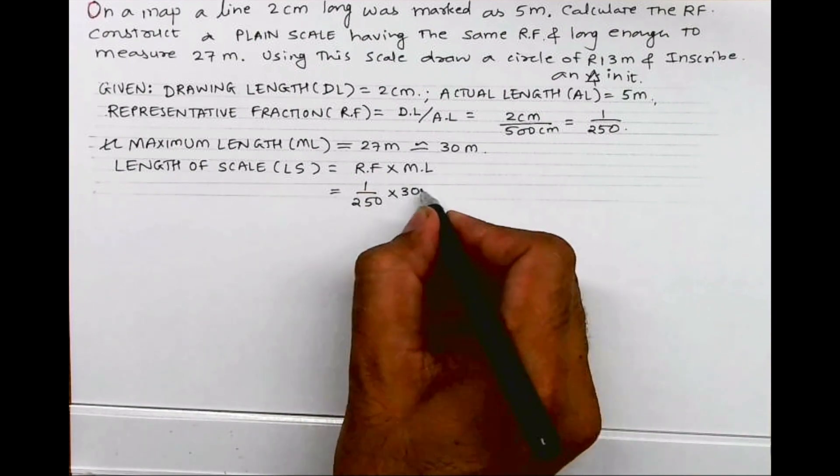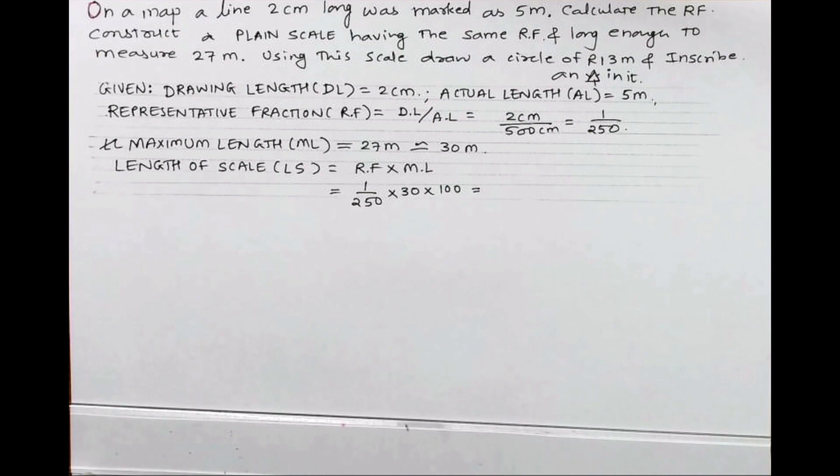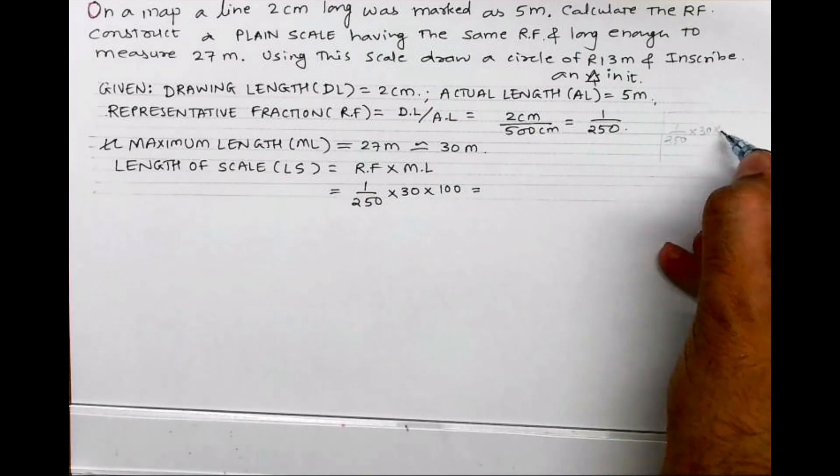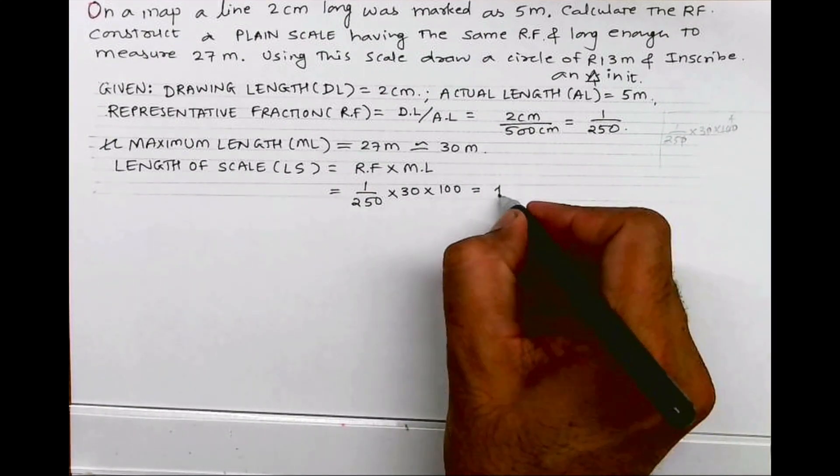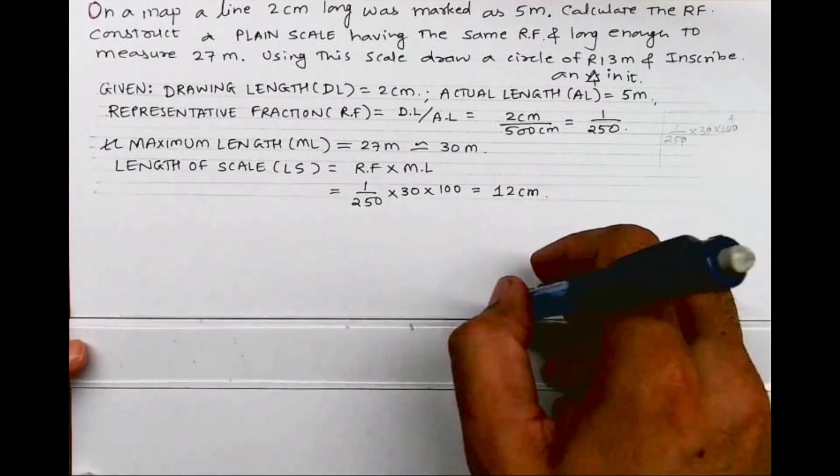RF is 1 upon 250, ML is 30 into 100. If you do the rough calculation, 1 upon 250 into 30 into 100, it will be 12 cm. So we got length of scale equal to 12 cm. I will draw 12 cm.